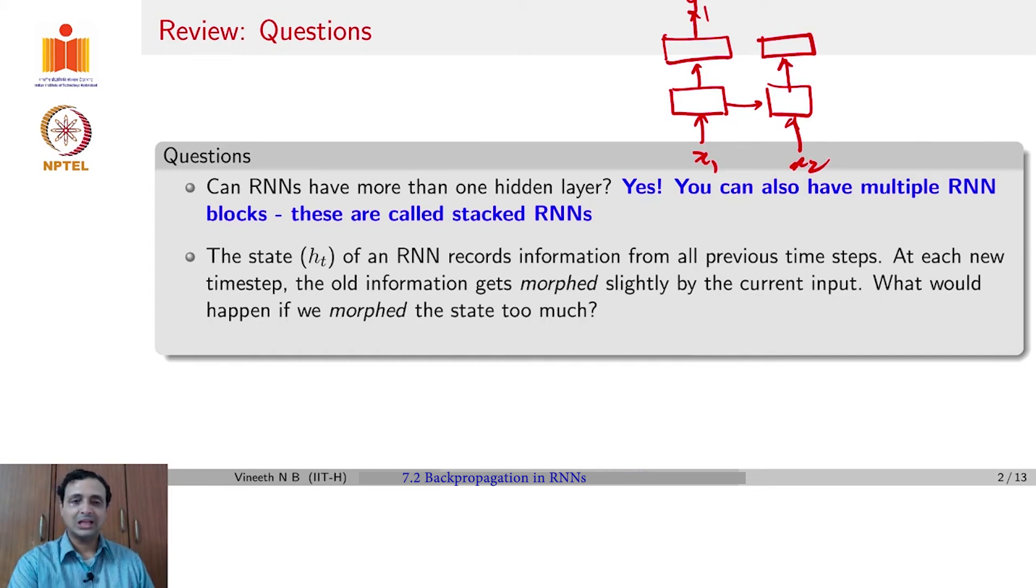In such an architecture, which is also known as a stacked RNN, the weights at each level are all shared. At this level, all the weights are the same across all the time steps. And at level 2, all the weights are the same across all time steps. Such an architecture is known as a stacked RNN.